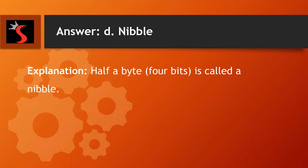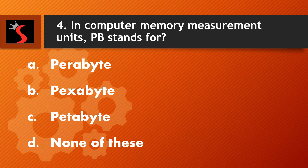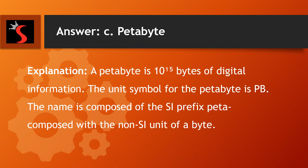Explanation. Half a byte is called a nibble. A petabyte is 10 to the power 15 bytes of digital information. The unit symbol for the petabyte is PB. The name is composed of the SI prefix Peta, combined with the non-SI unit of a byte.